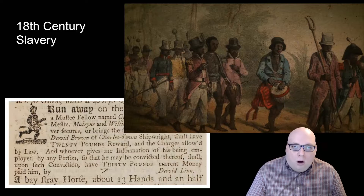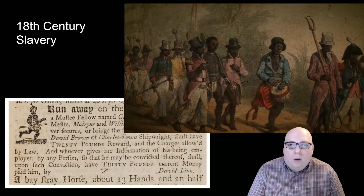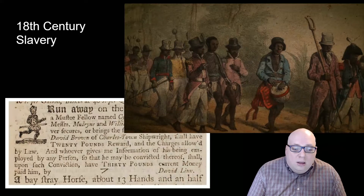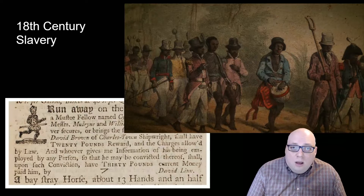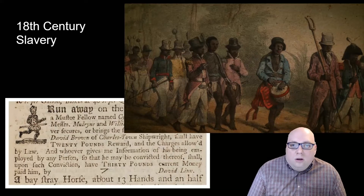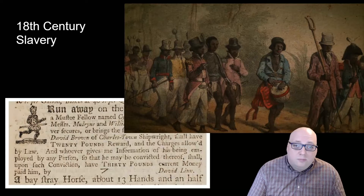In 1741 in New York, there were rumors that another rebellion was being organized, with slaves receiving help from a few whites to burn down houses and start an uprising. This caused such a frenzy of fear that 150 Blacks and 20 whites were arrested. At the end, 34 enslaved people were executed along with four whites. This hysteria and fear of slave uprisings would constantly occur throughout colonial society and into the formation of the United States.